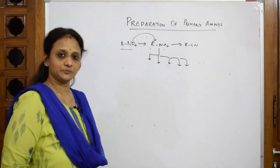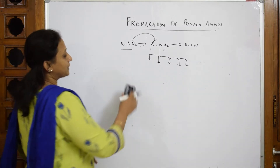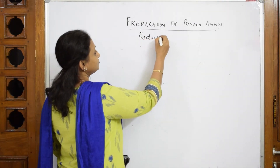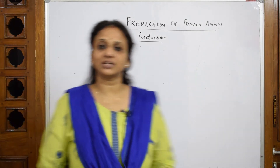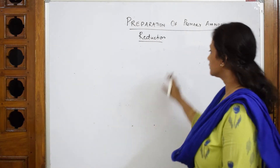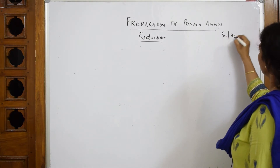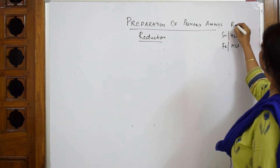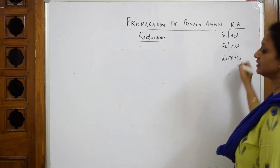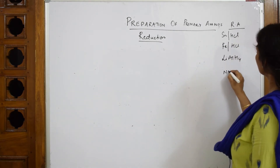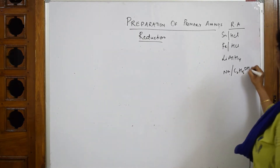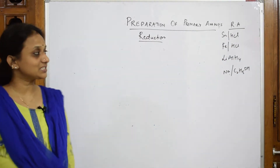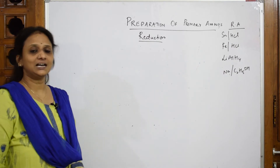Let us learn the preparations of primary amines by reduction process. Whenever I speak about reduction, I have to speak in terms of reducing agents. The different reducing agents I can use are: metal in the presence of acid, Fe in the presence of acid, lithium aluminum hydride, or sodium metal in the presence of ethanol. I can use any of these to reduce a given compound.